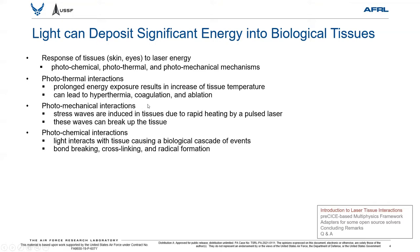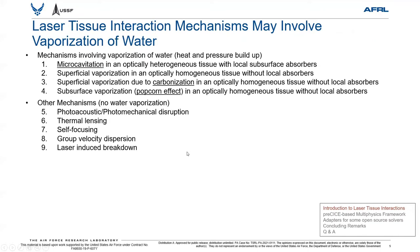In photomechanical interactions, stress waves are induced in tissues due to rapid laser heating, and under certain conditions the waves can even fragment — that is, break the tissue up. In the photochemical case, light can interact with tissues and cause a cascade of biological events, such as bond-breaking, cross-linking, and radical formation. There are many laser tissue interaction mechanisms, broadly classified into two categories: those that involve vaporization of water, and those that do not. Microcavitation, carbonization, and the popcorn effect involve vaporization of water and subsequent heat and pressure buildup within the tissue. Photoacoustic disruption, thermal lensing, and self-focusing are examples of mechanisms that do not necessarily involve vaporization of water. Some mechanisms, such as self-focusing and laser-induced breakdown, involve nonlinear effects.